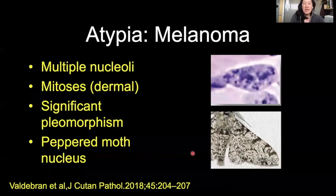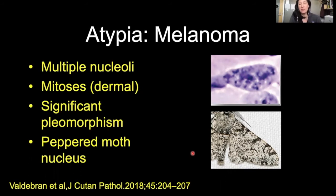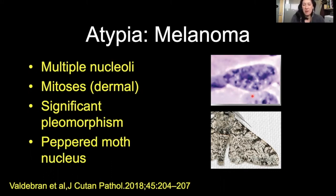When we take that to the extreme of melanoma, you're going to see multiple nucleoli, dermal mitoses, more significant pleomorphism, and something that Dirk Ellison likes to refer to as the peppered moth appearance of nuclei. On the bottom right, here's our peppered moth. In the upper panel, this is a melanocytic nucleus showing that chromatin all broken up and dispersed in that peppered moth pattern.